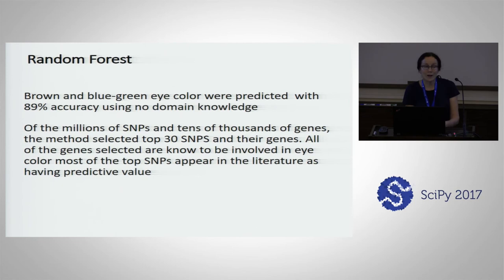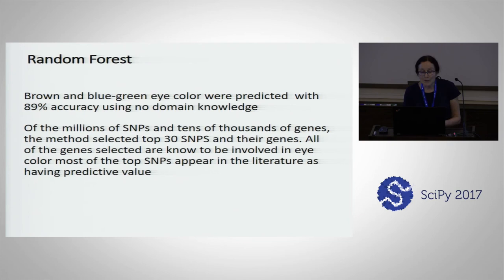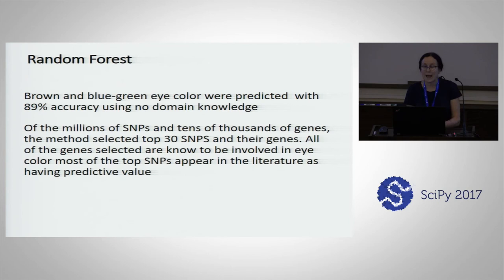Going into what we did with eye color, we used Random Forest as described. Brown and blue eye color were predicted with 89% accuracy using no domain knowledge — just millions of SNPs, and it picks out the right ones. Something particularly interesting is that of the millions of SNPs and tens of thousands of genes, the method selected — looking at the top 30 SNPs and their genes — all the top SNPs had genes known to be associated with eye color, covering pretty much all of them.